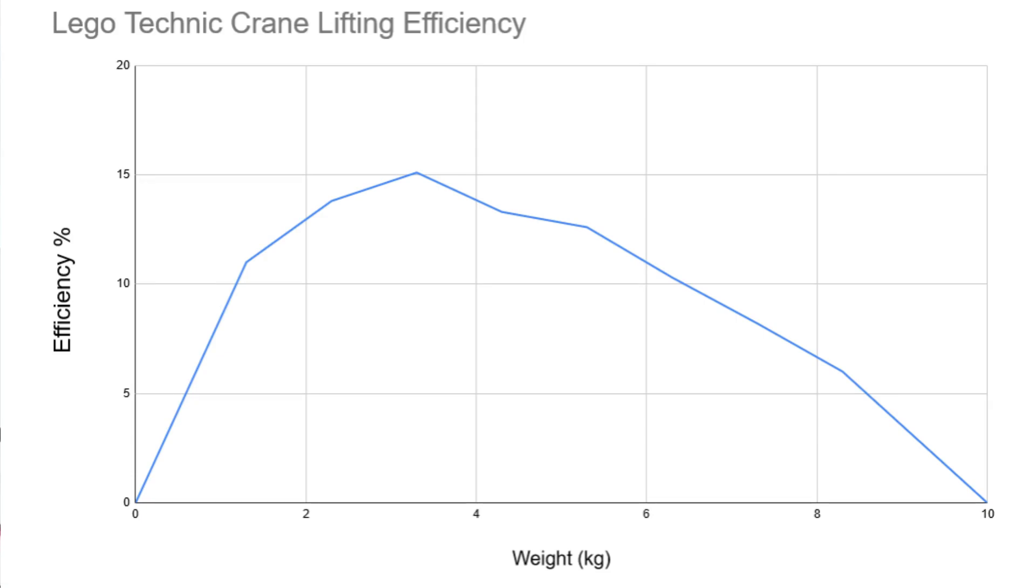And finally, here's the results plotted on the graph. So again, as you can see, the efficiency starts at zero at zero weight. It peaks at 15.1% at 3.3kg, and then it drops all the way to zero at maximum weight.